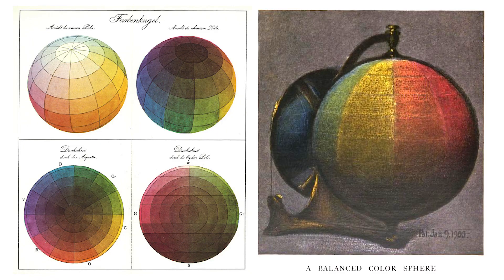The Munsell system introduced the idea of a color solid — a 3D model representing all possible hues at every value and chroma. This system, along with others like Joseph Albers' study on color perception, remains vital in art education today.